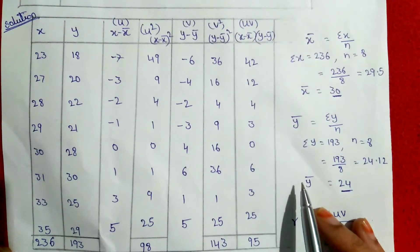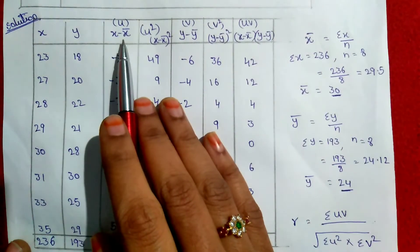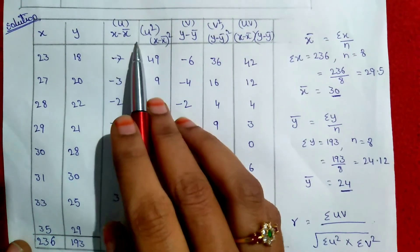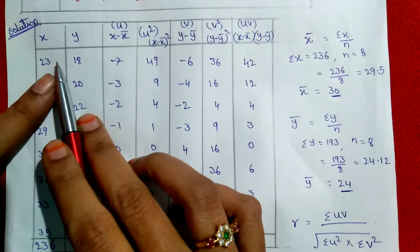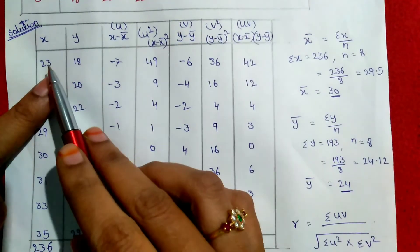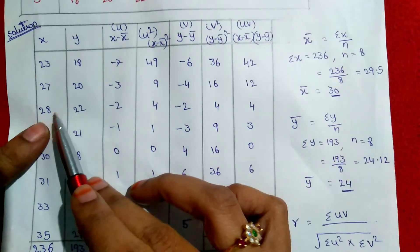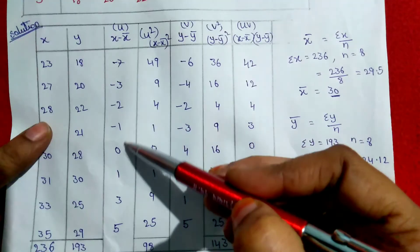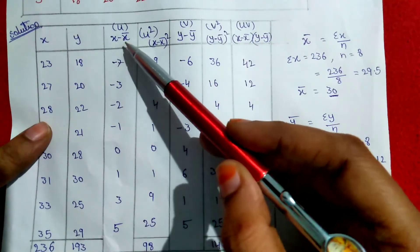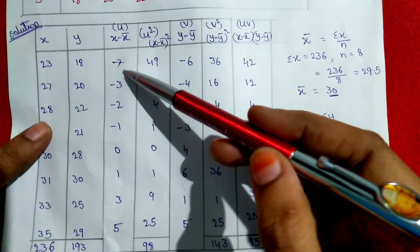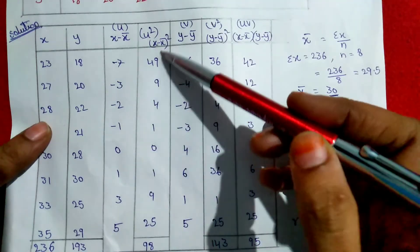After calculating x-bar and y-bar, we calculate x minus x-bar, denoted as u. The x-bar value is 30. So: 23 minus 30 equals minus 7; 27 minus 30 equals minus 3; 28 minus 30 equals minus 2. We calculate all x minus x-bar values this way. Then for u-squared — that is, x minus x-bar whole squared — we get: minus 7 squared is 49; minus 3 squared is 9; and so on.